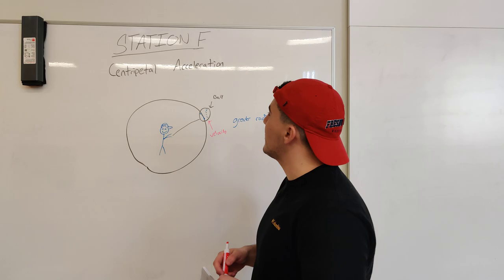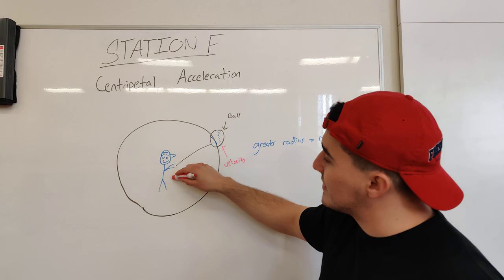Hi guys, welcome to the Kinesse 116 Kinematics Lab. I'm going to go over Station F. So for Station F, we're going over Centripetal Acceleration, which is acceleration that is directed towards the center of rotation or the axis.